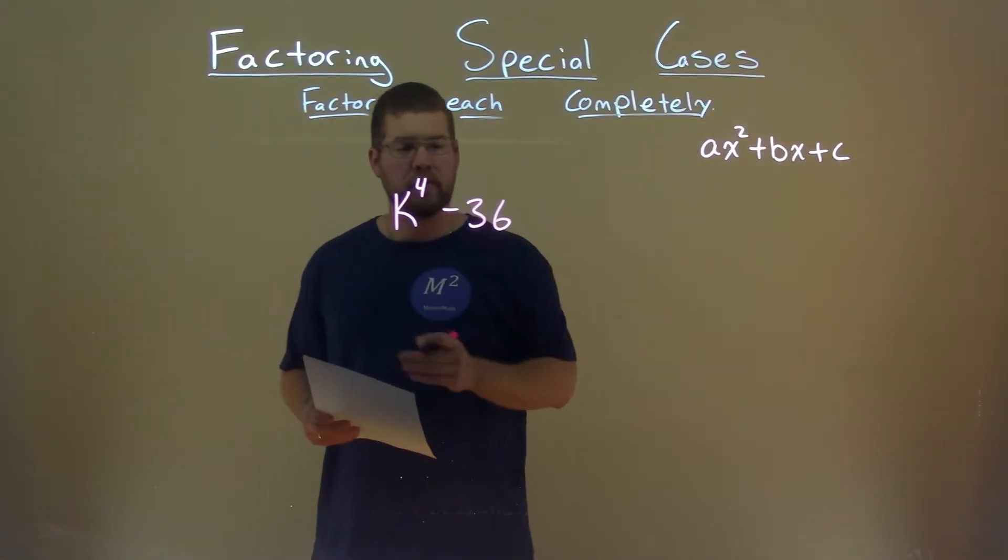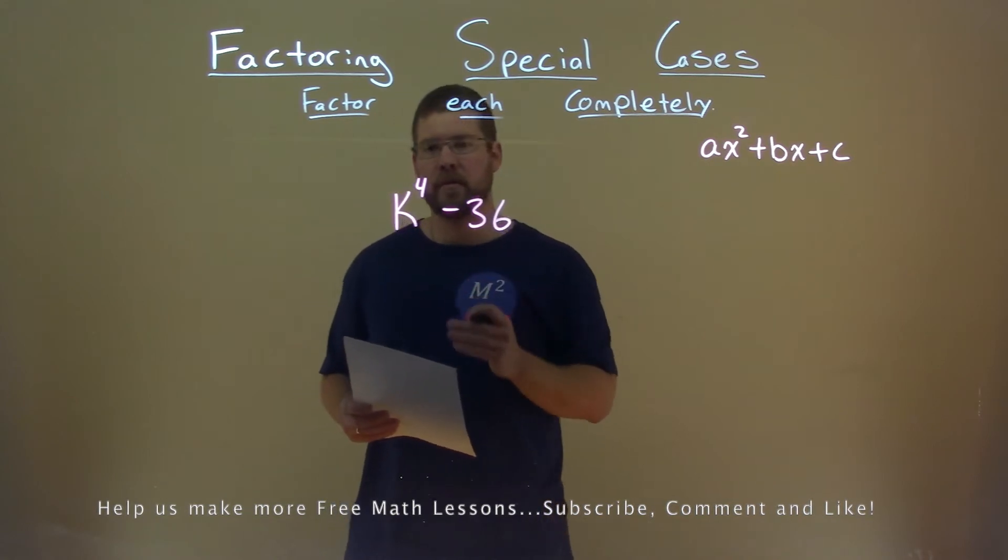We're given this problem right here, k to the fourth minus 36, and we need to factor this completely.